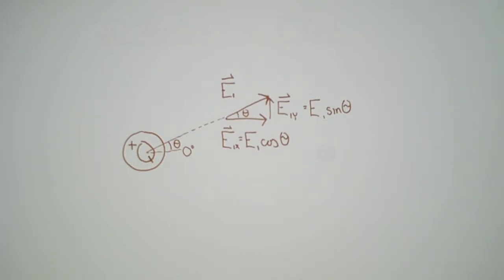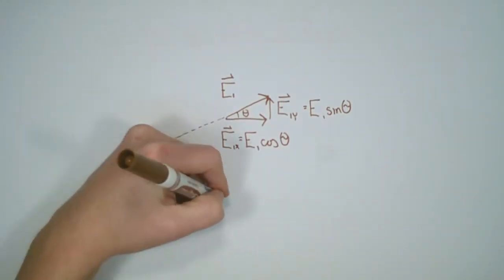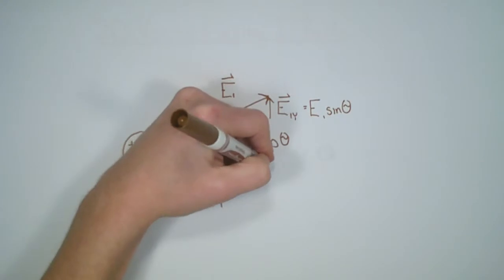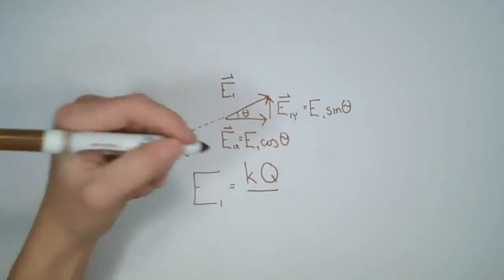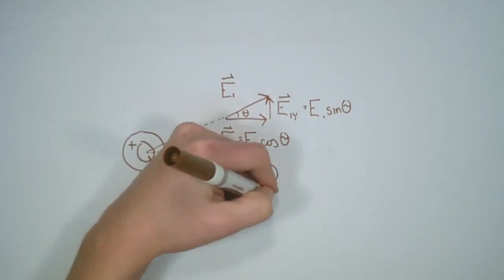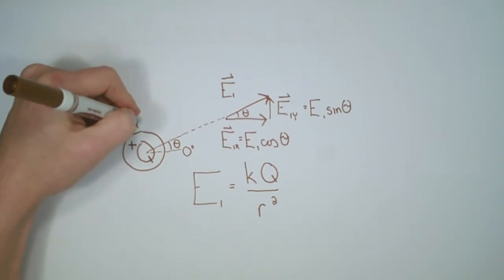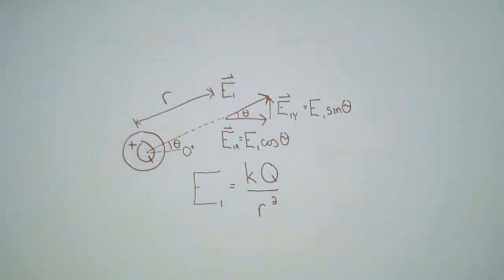To determine the magnitude of the field, E1 is equal to k multiplied by the charge divided by r squared, where r is the physical separation from the point of interest to the charge.